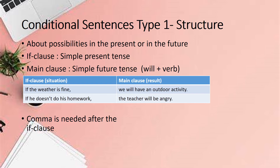Now let's look at the structure of the first conditional sentence. This type of conditional sentence is about possibilities in the present or in the future. We use the simple present tense in the if clause and we use the simple future tense — will plus verb — in the main clause. For example: If the weather is fine, we will have an outdoor activity. You can see in the if clause we use the present tense 'is', and in the main clause we use the simple future tense 'will have'.